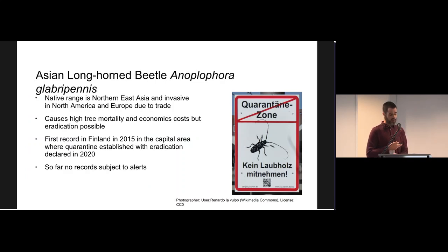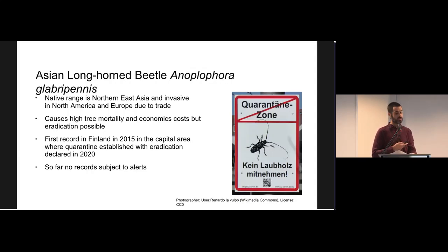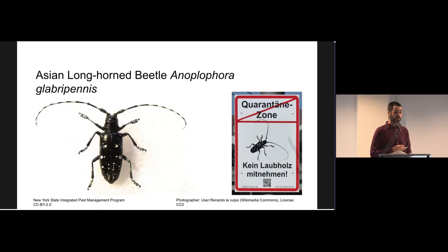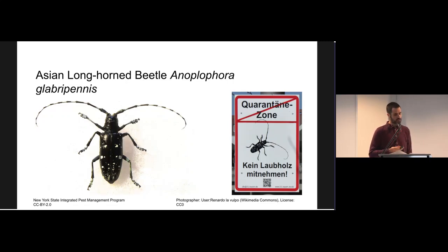In contrast, the Asian longhorned beetle has so far not been the subject of any of our automated alerts. This insect's native range is northeast Asia and it is an invasive pest in North America and Europe due to trade in wood products and other goods. It's a significant pest that causes high tree mortality and economic losses, but if caught early, eradication is possible. It was first found in Finland in the capital region in 2015. A quarantine area was established around the incursion and control measures were conducted, with eradication finally declared only in 2020. No records in FIMBIF of this taxa have triggered alerts yet, as we only set up our alert system with the Finnish Food Authority starting this year.